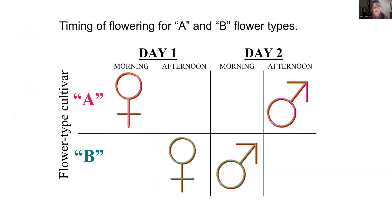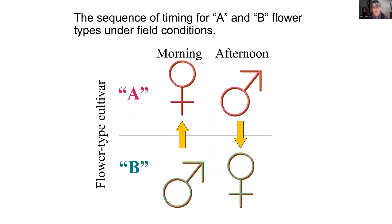Avocados are a bit more complicated: we have A flower types like Hass, and B flower types like Zutano, Ettinger, and Bacon. For A flower types, depending on the temperature the night before, flowers open female in the morning, then close around noon and remain closed through the afternoon, and the following afternoon they open as male. B flower types open female in the morning, close, and the following morning they open as male — allowing cross pollination where pollen moves from the male B flower to the female A flower in the morning, and the reverse in the afternoon.